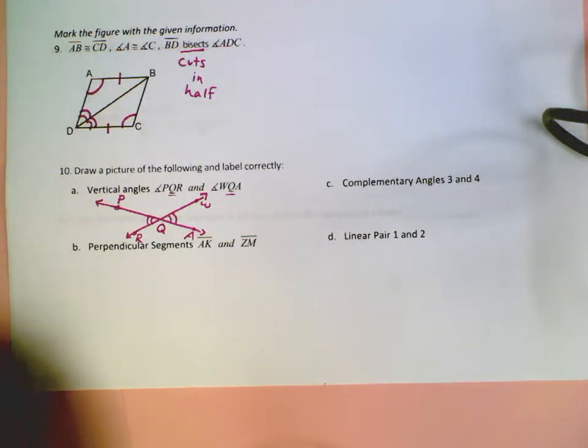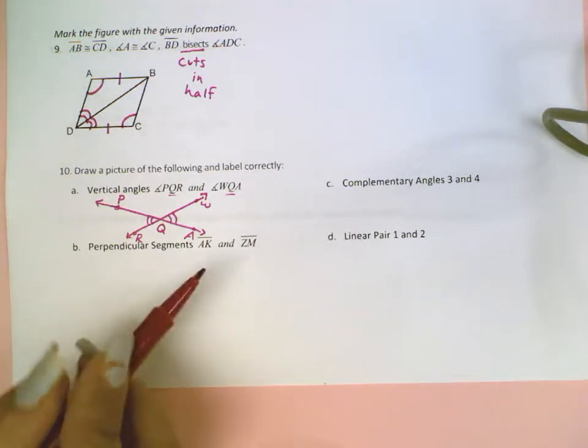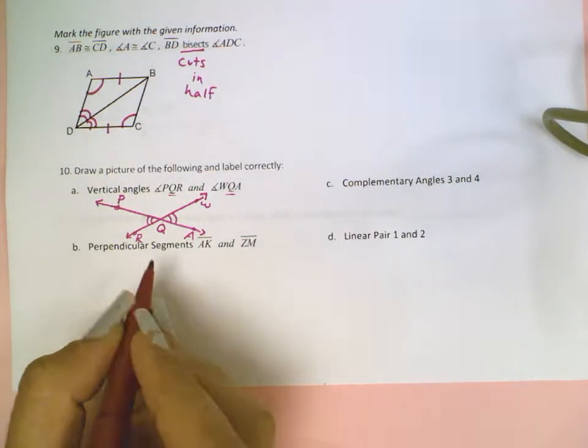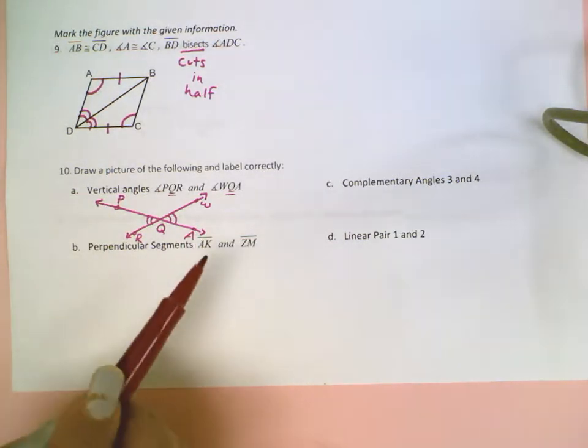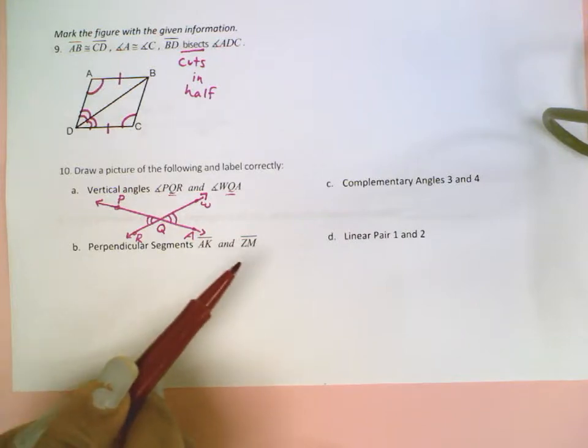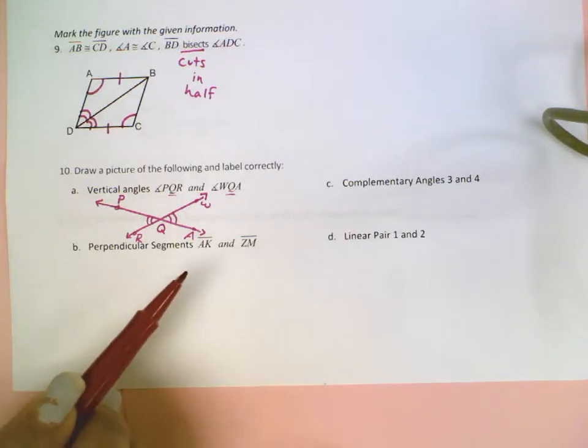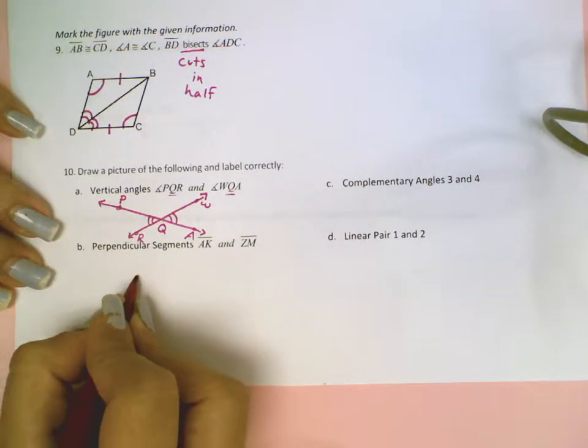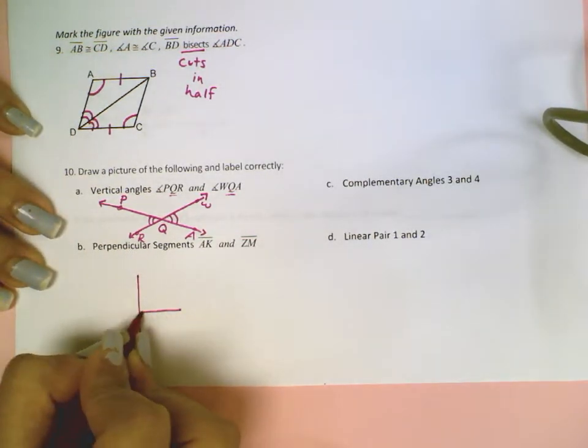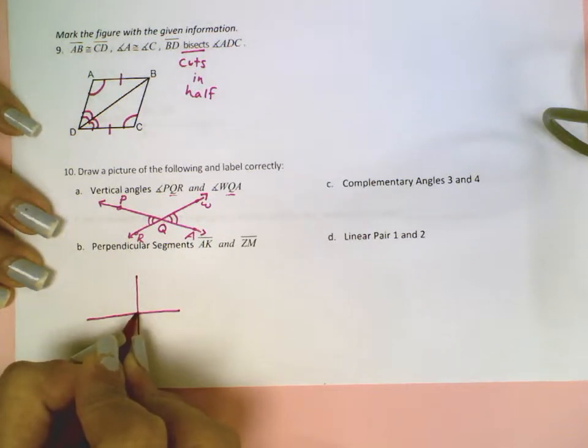They tell me they're perpendicular segments. So this means I will have two segments that create a right angle. Notice that AK and ZM do not share any vertex. So that means that they are not going to both share this guy right here.